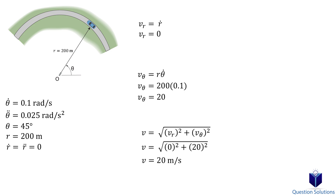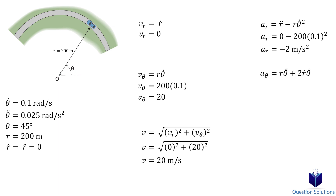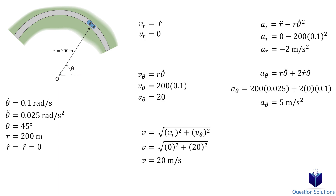Now we can solve for the magnitude of acceleration. First, we find the radial component of acceleration using its equation and plug in the known values. Then for the transverse component of acceleration, we again plug in the values. Since we have both components, we find the magnitude using the combined equation, and solving gives us our answer.